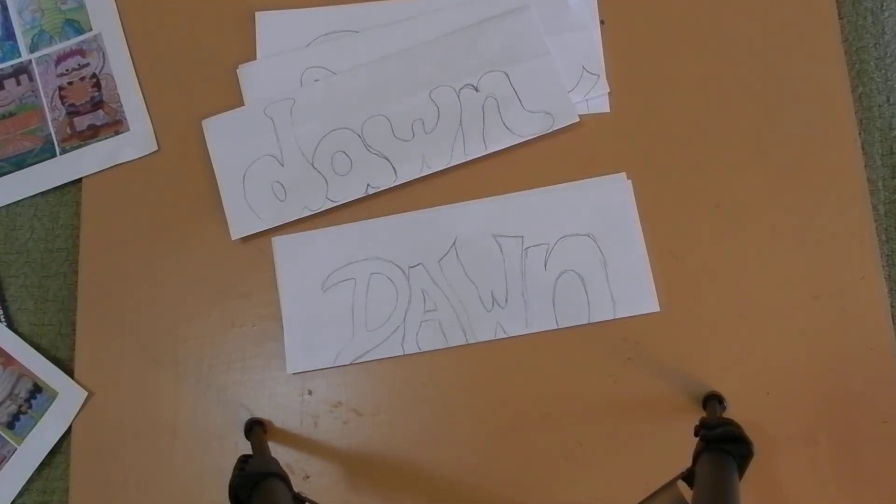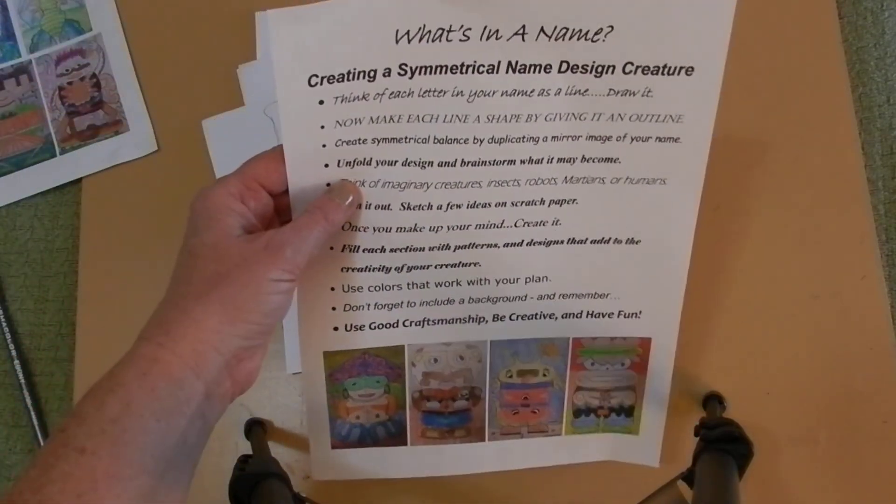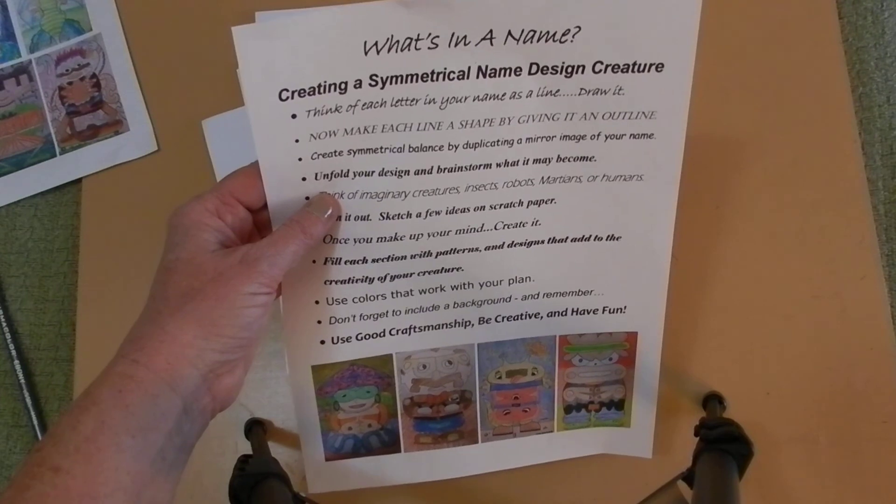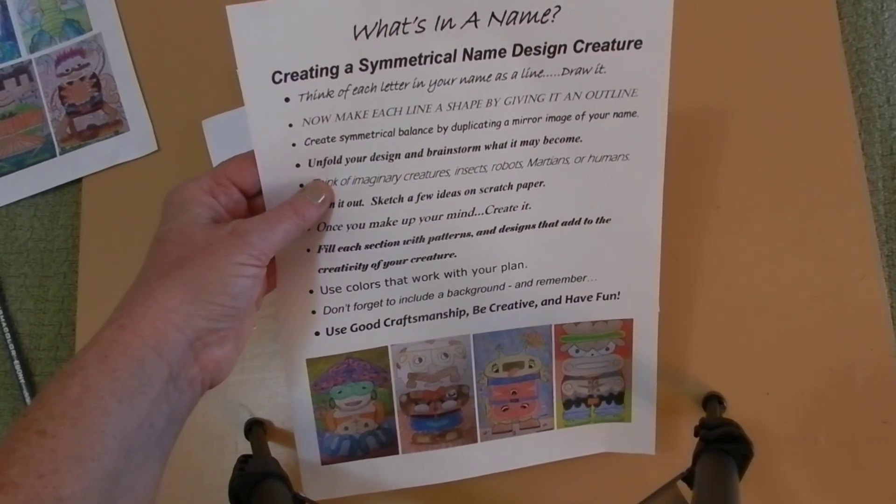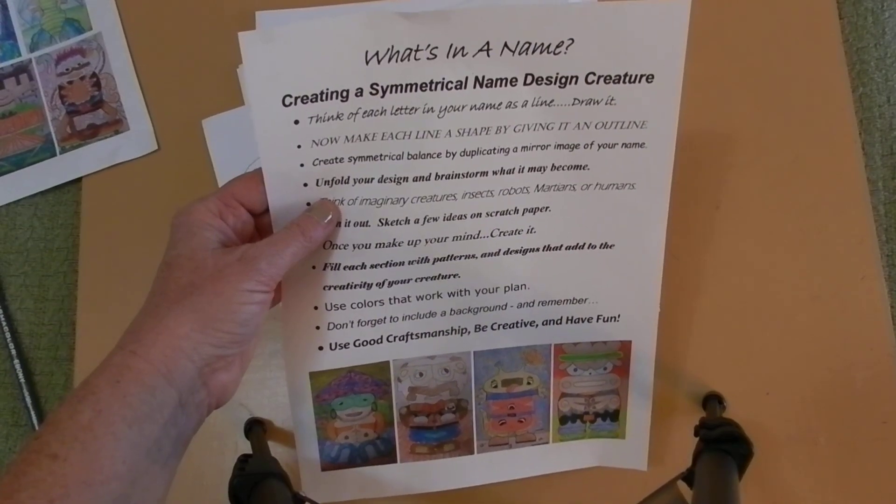And that concludes the first two steps. Again, you are creating a symmetrical name design creature. And that completes steps one and two. I'll see you in just a few minutes for the next step. Thank you for watching.